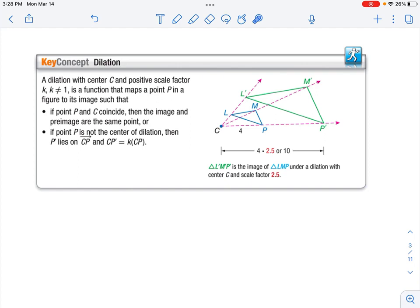And if point P is not the center of dilation, then P' lies on the ray CP, the segment CP' is equal to our K value, our scale factor, times our original CP. For example, it makes more sense over on this example: CP is 4 units long, our scale factor is 2.5. So if we take 4 times 2.5, you get 10.